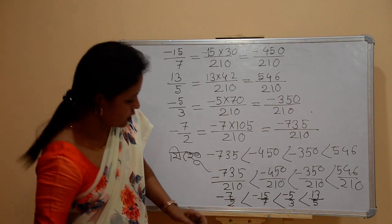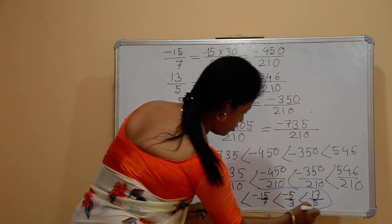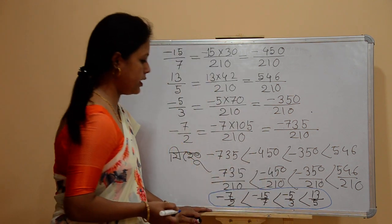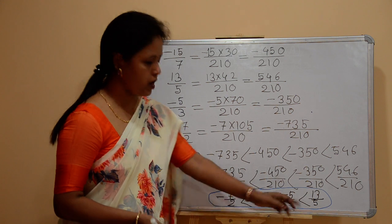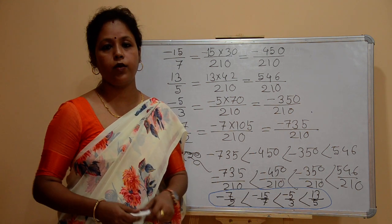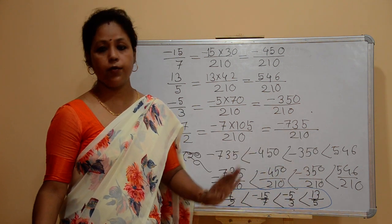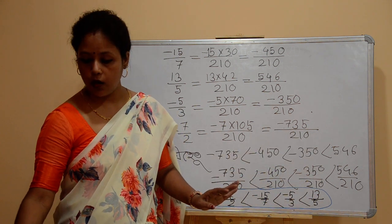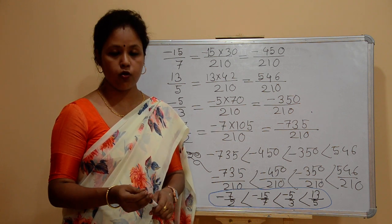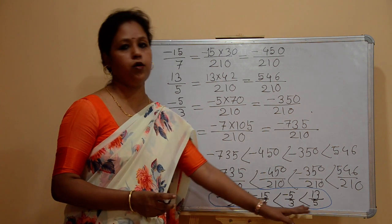Now I will write: minus 5 by 3, less than 13 by 5. So the final order is: minus 5 by 3, less than 13 by 5. I am doing it very well, and the thing that you can do is I am doing it very well.